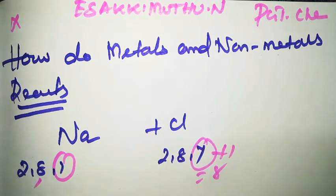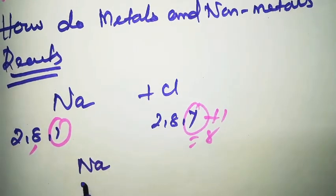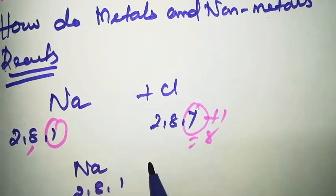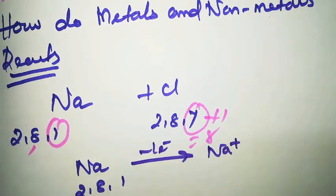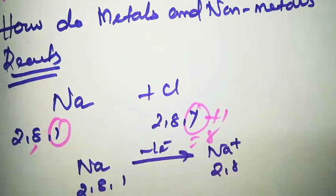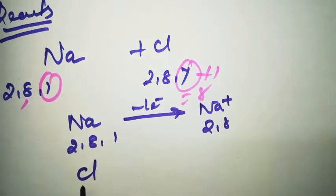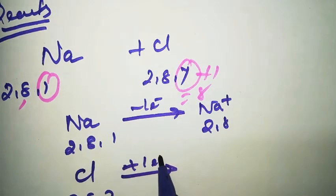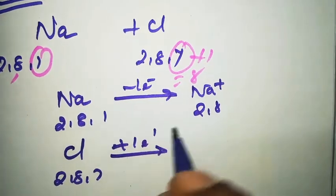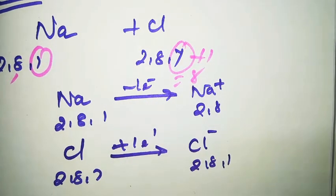Sodium (Na), with configuration 2, 8, 1, loses one electron to form Na+, giving configuration 2, 8. Next is chlorine: atomic number 17, configuration 2, 8, 7 - gaining one electron to become Cl-, giving configuration 2, 8, 8. This is the shell configuration after electron transfer.